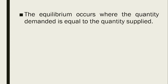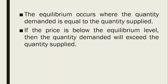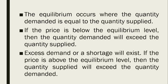The equilibrium price and equilibrium quantity occur where the supply and demand curves cross — where the quantity demanded is equal to the quantity supplied. If the price is below the equilibrium level, then the quantity demanded will exceed the quantity supplied, and excess demand or shortage will exist. If the price is above the equilibrium level, then the quantity supplied will exceed the quantity demanded.